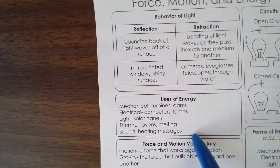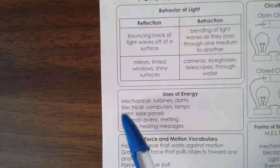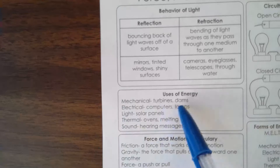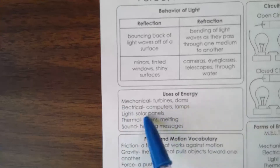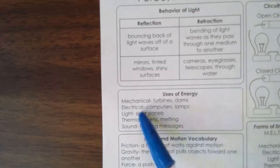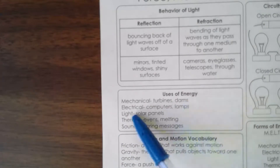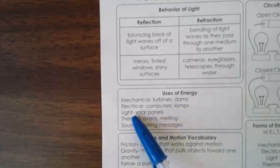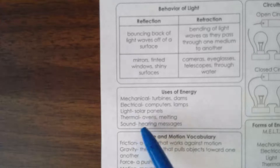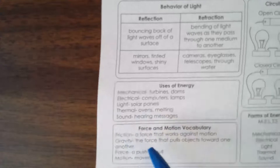Let's talk about uses of energy. Here's your acronym: MELTS. Mechanical — turbines, dams. Electrical — computers, lamps. Light — solar panels. Thermal — ovens and melting. Sound — hearing messages. These are your five types of energy. Mechanical means you're moving, you're doing something. Electrical is electricity. Light is from the sun or a light bulb. Thermal is heat. And sound is what you hear.